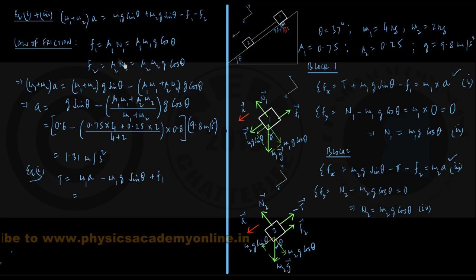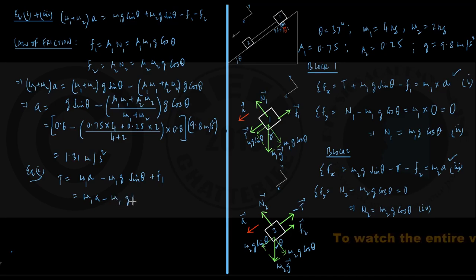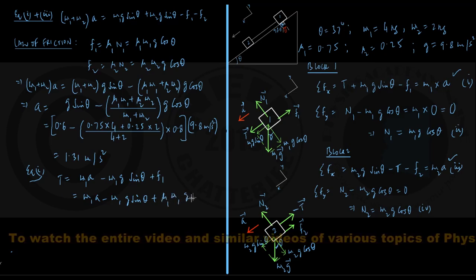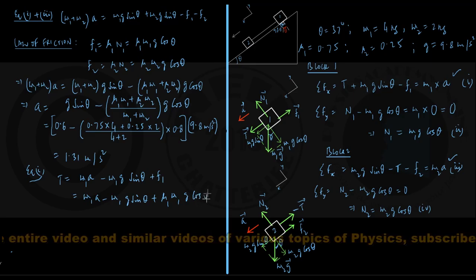Now frictional force already has been found to be mu1 m1g into cos theta here. So I put the value, that is m1a minus m1g sin theta plus mu1 m1g into cos theta.